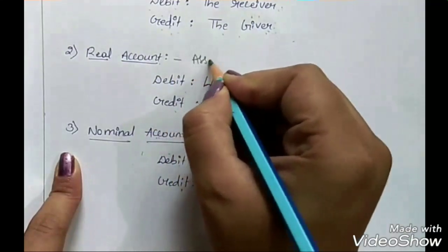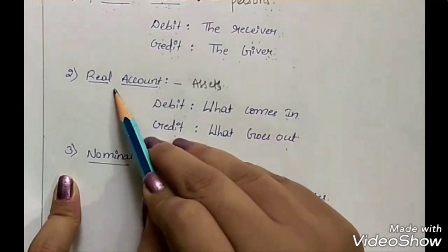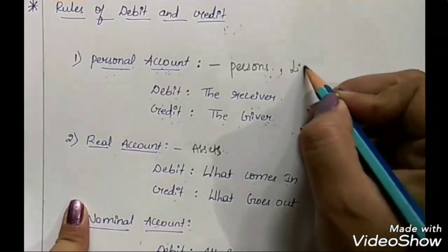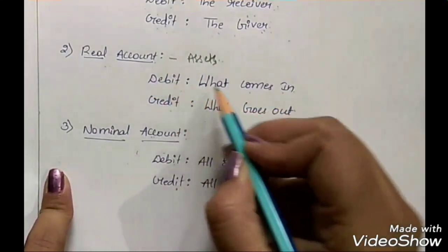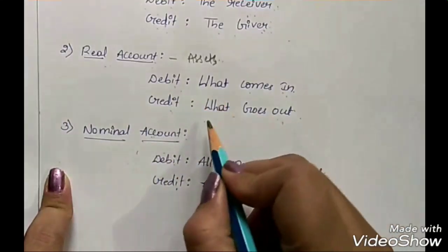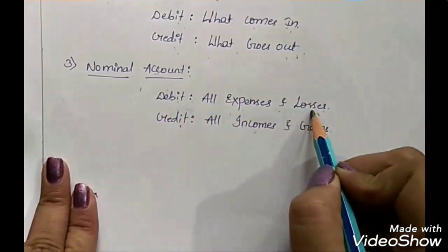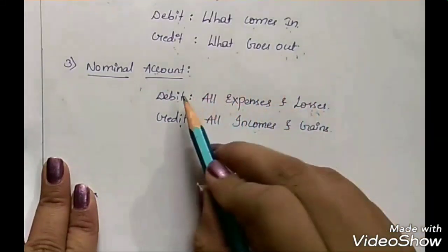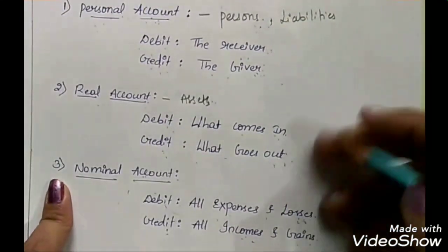Next is real account, which deals with all types of assets. Remember that liabilities do not come under real account — liabilities are related to persons, hence they come under personal account. The real account rule says: debit what comes in and credit what goes out. If something is coming into the business it should be debited, and if something is going out it should be credited.